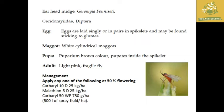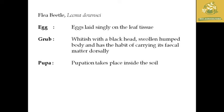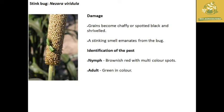Management of earhead midge involves insecticide spraying with Carbaryl, Malathion, or Carbaryl 50 WP at 750 grams per hectare with 500 litres of spray fluid per hectare. Another important pest in kambu is the flea beetle, with scientific name Lemma sp. The biology: eggs are laid singly on leaf tissue; grubs are white with a black head and swollen humped body, and carry fecal matter dorsally. Pupation takes place inside the soil.